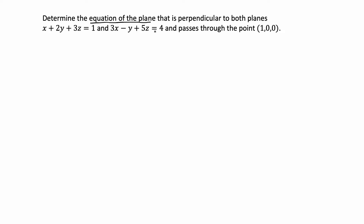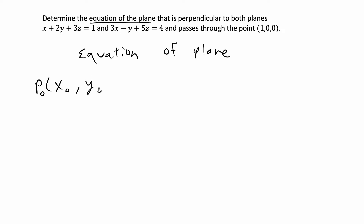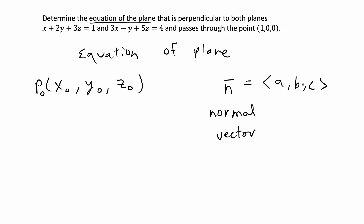The solution to this problem is an equation of a plane. Basically what we need to do is we need to know what the equation of a plane is and how to fill in all the missing variables for this equation. The equation of a plane has two parts: it's going to have a point that the plane passes through, which I'm going to call P0, with coordinates x0, y0, and z0, and it's going to have what's called a normal vector, which I'm going to denote as vector n, with coordinates A, B, C. A normal vector is a vector that is perpendicular to a plane.